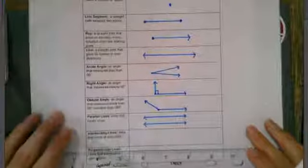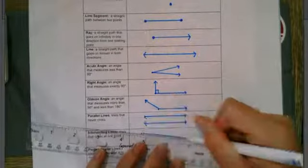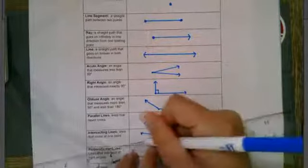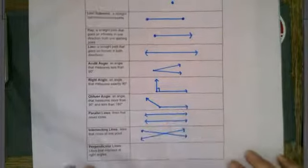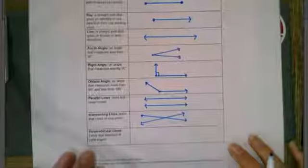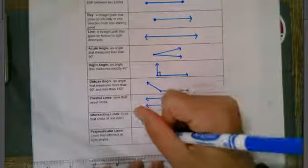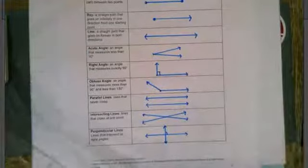And then intersecting lines. Lines that cross at one point. So here's one line. And then it intersects at a right angle. So I have to make it precise. And here's my right angle that it intersects at.